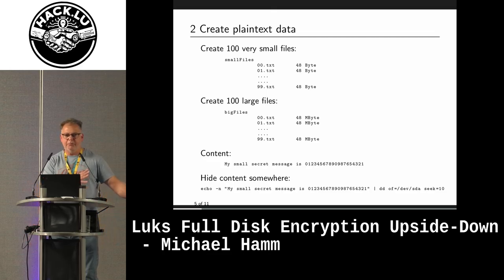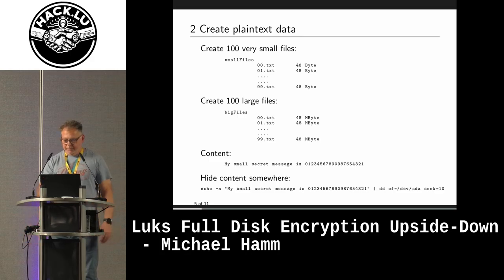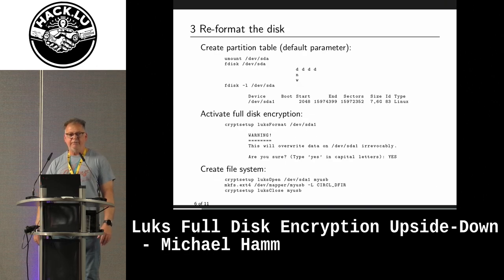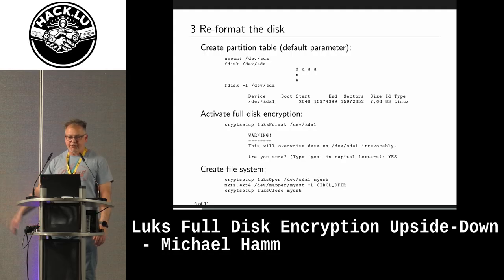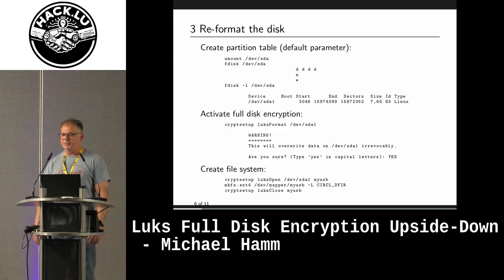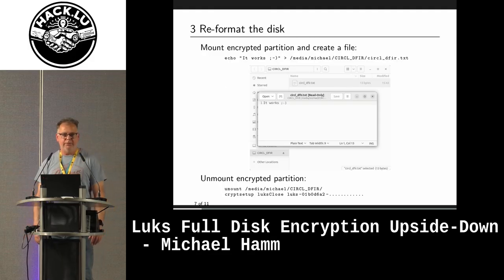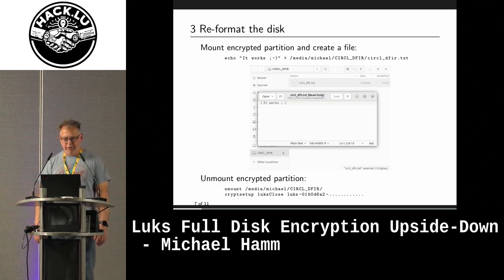Sector 11 is in the space between the master boot record and the start of the partition. Then I connected the stick to my Linux machine, created a new master boot record with a partition table, activated full disk encryption using the command-line tool cryptsetup, and created a new file system on the partition. Afterwards, I mounted the partition, created a small file, saved it, and unmounted it.